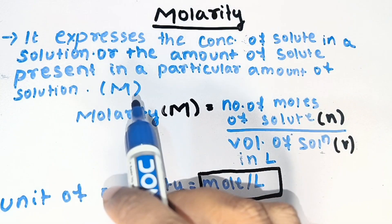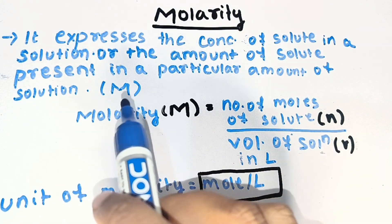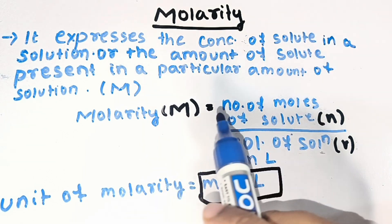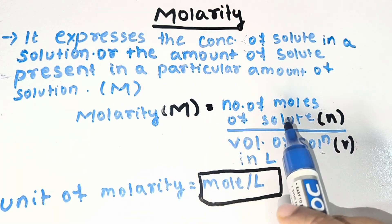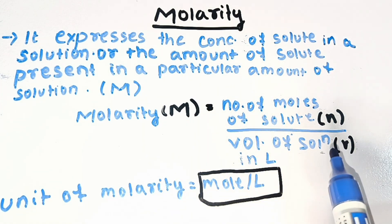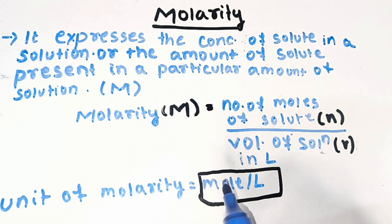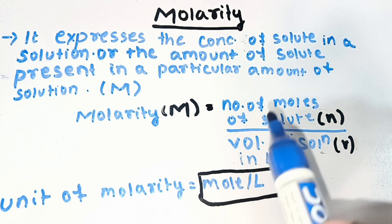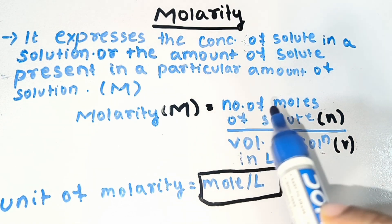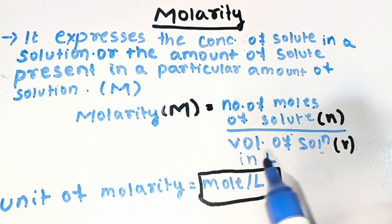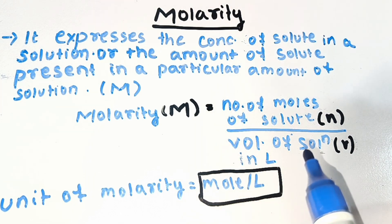Molarity is denoted by capital M. Molarity of a solution can be calculated by taking number of moles of solute and dividing it by volume of solution taken in terms of liter. The unit of molarity will be moles per liter, because mole is derived from number of moles of solute and liter is derived from volume of solution taken in terms of liter.